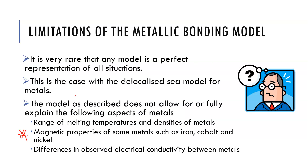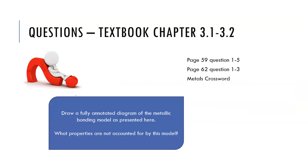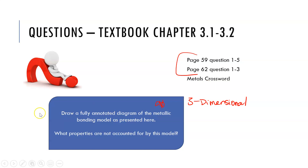That covers all the properties we need to know, linked back to the structure. When answering questions in these areas, using an annotated diagram and relating your answer back to it is a good approach. The questions to consolidate this are on page 59–62 of your textbook. You should have an annotated diagram of your metallic bonding model — without annotations it tells us nothing — referring to the three-dimensional nature of the lattice, the delocalized sea, and making note of the properties not covered by this model.